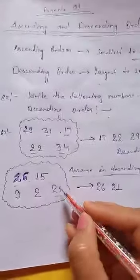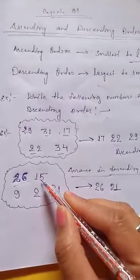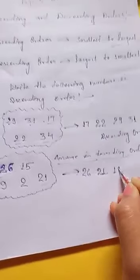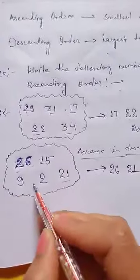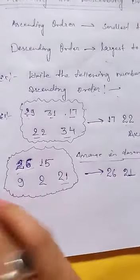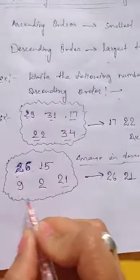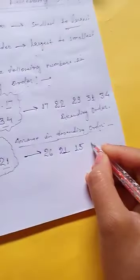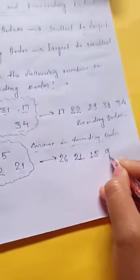The next two-digit number is 15, so we write 15 after 21. Now only one-digit numbers are left. We compare them: 9 is greater than 2. So the greater number is 9, and we write 9 next. Lastly, the smallest number is 2.